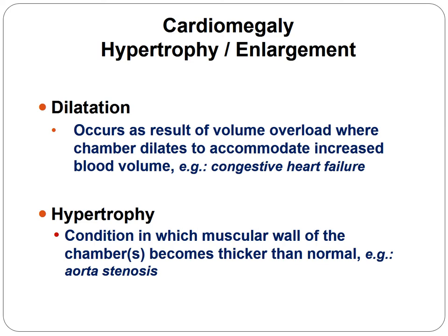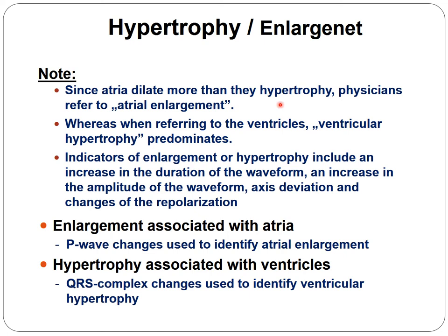The atria dilate more than they hypertrophy, so physicians refer to atrial enlargement. Whereas when referring to the ventricles, ventricular hypertrophy predominates. Indicators of enlargement or hypertrophy include an increase in duration of the waveform, an increase in amplitude of the waveform, axis deviation, and changes of depolarization. Enlargement associated with the atria can usually be diagnosed based on P wave morphology, while hypertrophy associated with the ventricles should be diagnosed based on QRS complex changes.